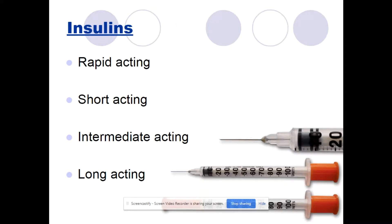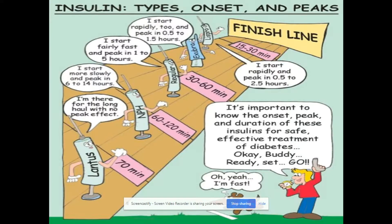Insulins have different acting times: rapid acting, short acting, intermediate acting, and long acting. This graphic shows how quickly these start to work. NovoLog is the very first one and starts working in 15 to 30 minutes. Lantus doesn't start until 70 minutes, but it's long acting and can work for 24 hours.